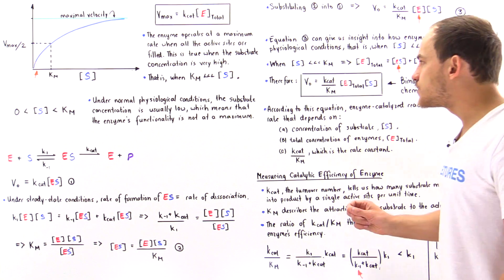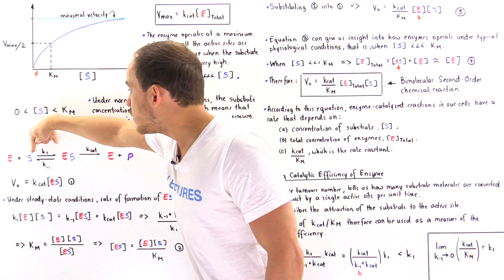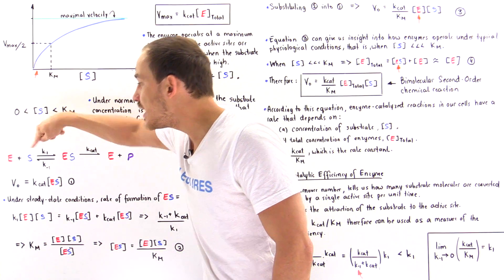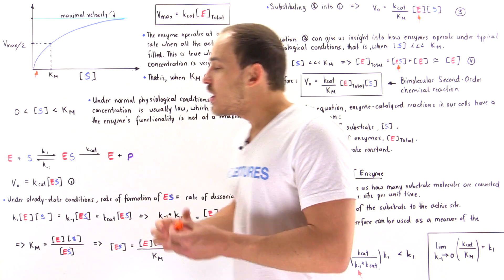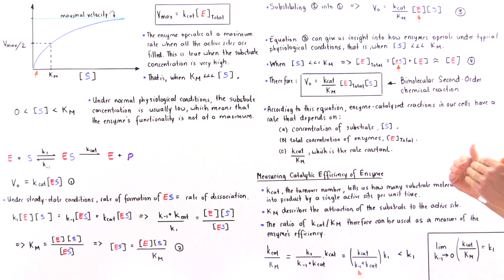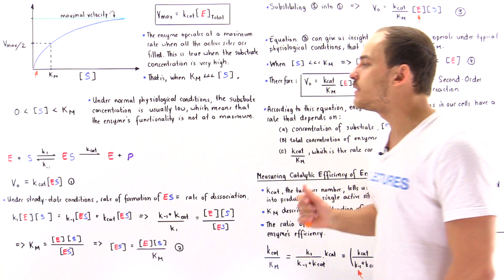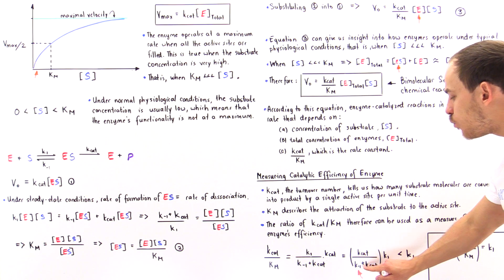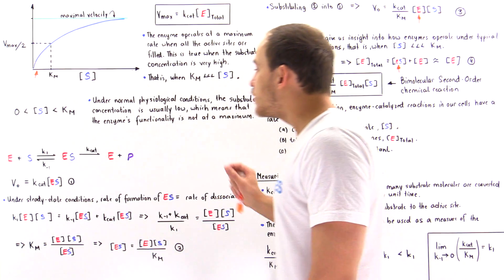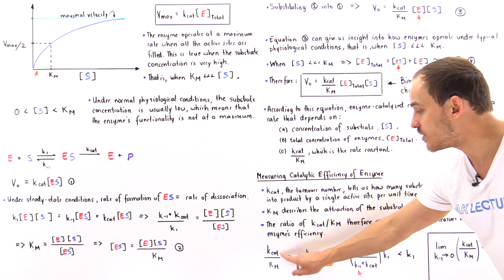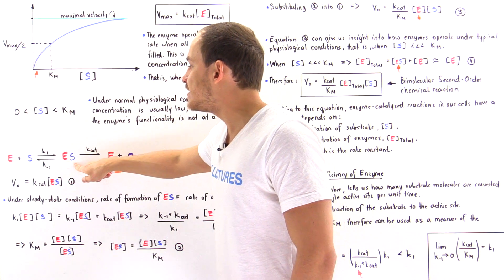The physical limit determining how high the Kcat/Km ratio can get is K1 — the rate constant describing the formation of the enzyme-substrate complex. The limiting factor is how quickly that enzyme-substrate complex actually forms. If K-minus-1 is very small, meaning the reverse reaction is slow, then Kcat/Km essentially approaches K1, the rate constant for enzyme-substrate complex formation.